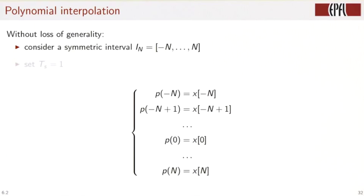Introduce an interval symmetric around the origin, call it from minus capital N to N. Set ts equal to 1. We can always rescale the axis to achieve any ts. And then we want to fit p of minus n to the sample x of minus n, p of 0 to the sample x0, up to p n to the sample xn.